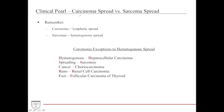A final clinical pearl on cancer spread: carcinomas usually spread via the lymphatic system, while sarcomas spread via the hematogenous system. A useful mnemonic is 'hematogenous spreading cancer runs fast': H for hepatocellular carcinoma, S for sarcomas, C for choriocarcinoma, R for renal cell carcinoma, and F for follicular carcinoma of the thyroid — all spread via the blood. To remember that sarcomas spread via blood, recall that sarcoma starts with S, and in Latin sanguis means blood.